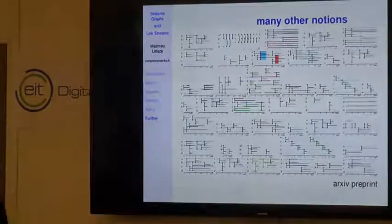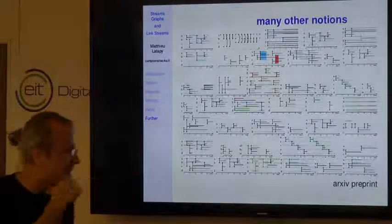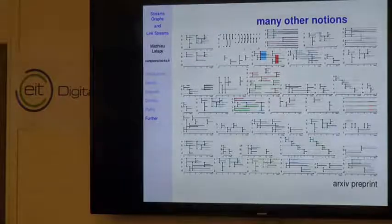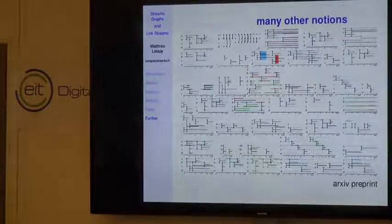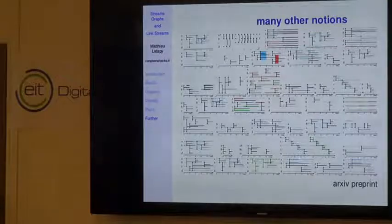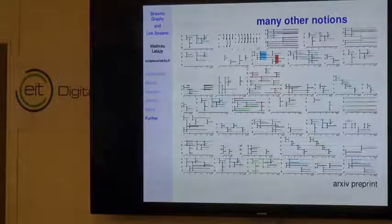We have published a preprint presenting the whole theory—about 40 to 50 pages of definitions with illustrations and examples. We generalize many graph notions including connectedness, k-cores, et cetera.